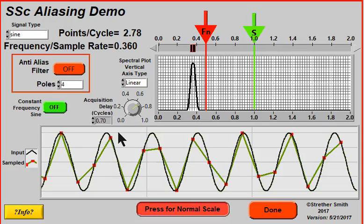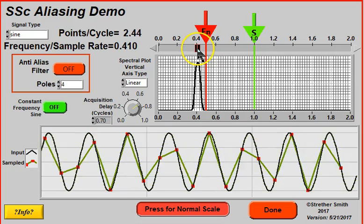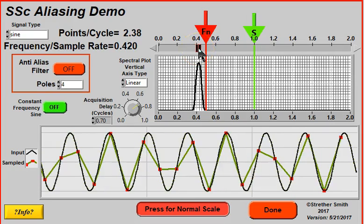But Shannon's theorem told us that if we acquire more than two points per cycle, then the signal is completely defined. So we will talk about that later. But for the moment, let's just assume that all of that is correct. And I'm going to continue on out to higher and higher frequency. And here is about 2.4 points per cycle. You can see that the data is relatively sparse.